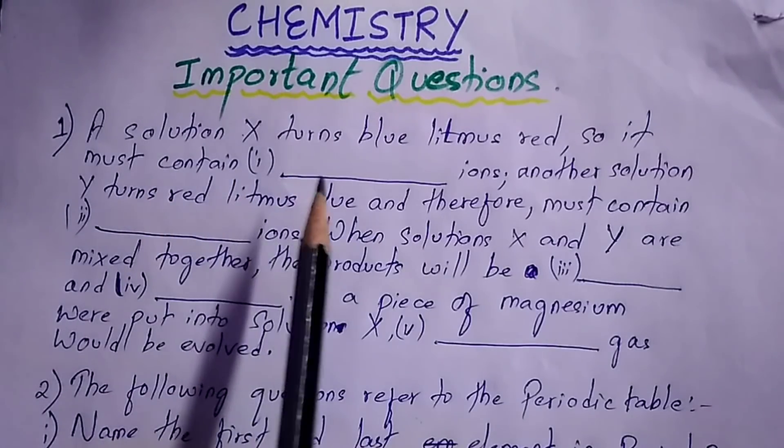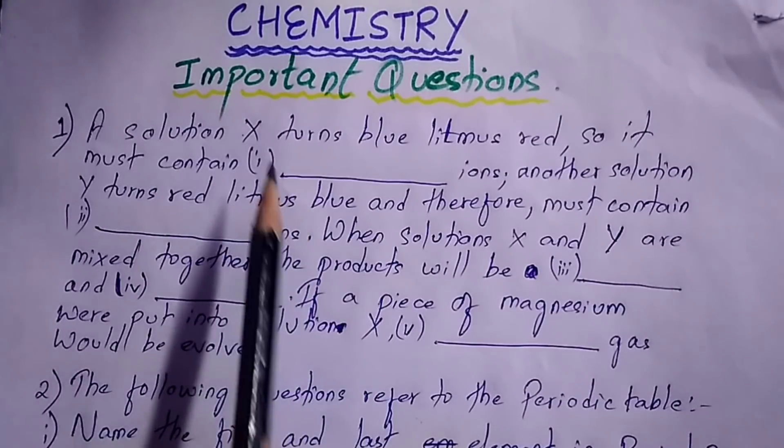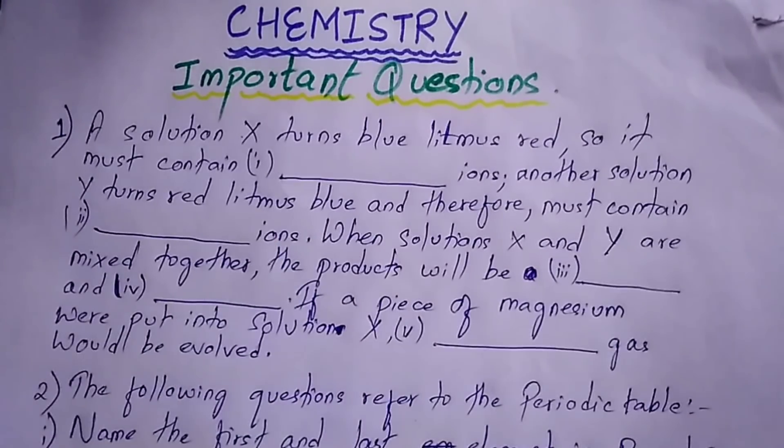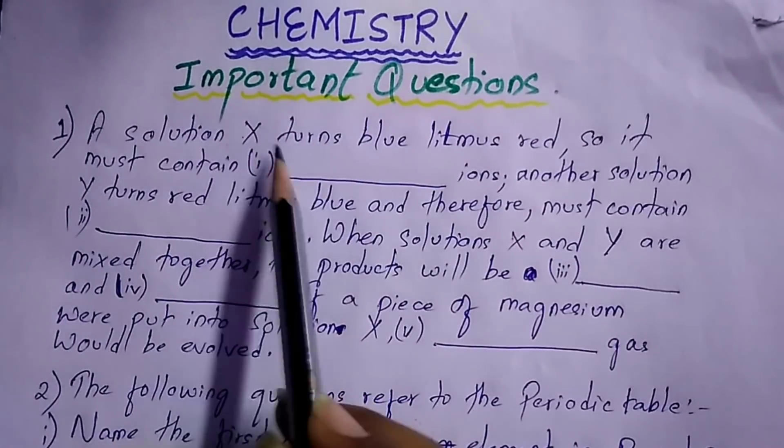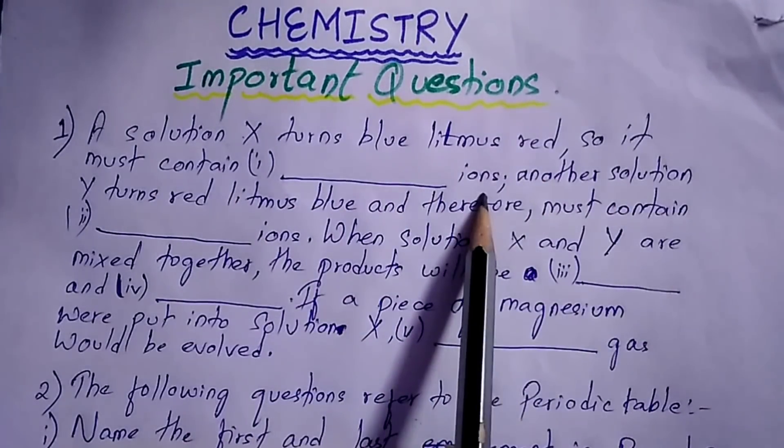Number one is a fill in the blanks question, and this question is repeated thrice in ICSE board exam. This question is from the chapter acids, bases, and salts.